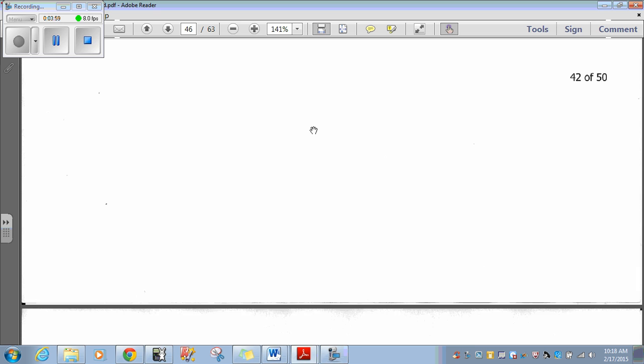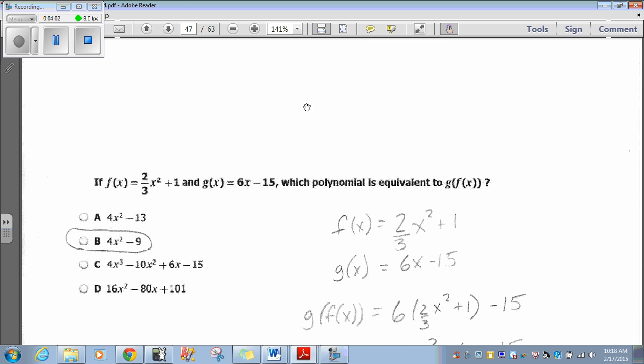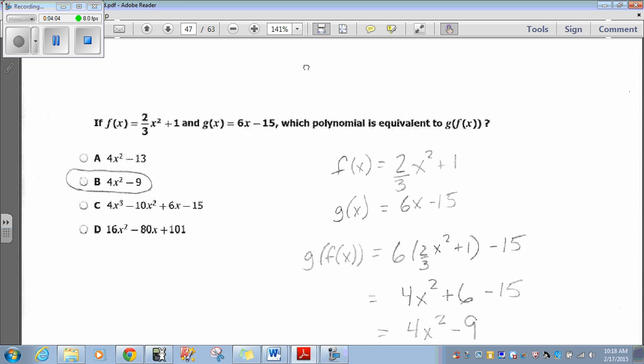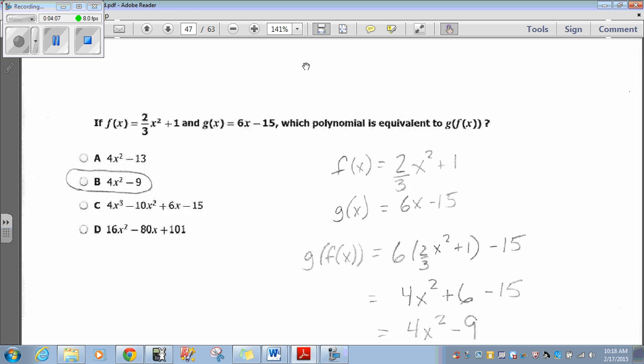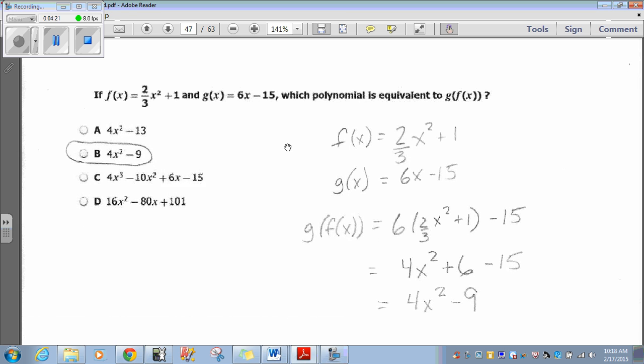Question 43. If f of x equals 2 thirds x squared plus 1 and g of x equals 6x minus 15, which polynomial is equivalent to g of f of x, which is composition of functions? So you need to be familiar with composition of functions. I worked it out by hand here. g of f of x, which means that we're going to plug in f of x into g of x.